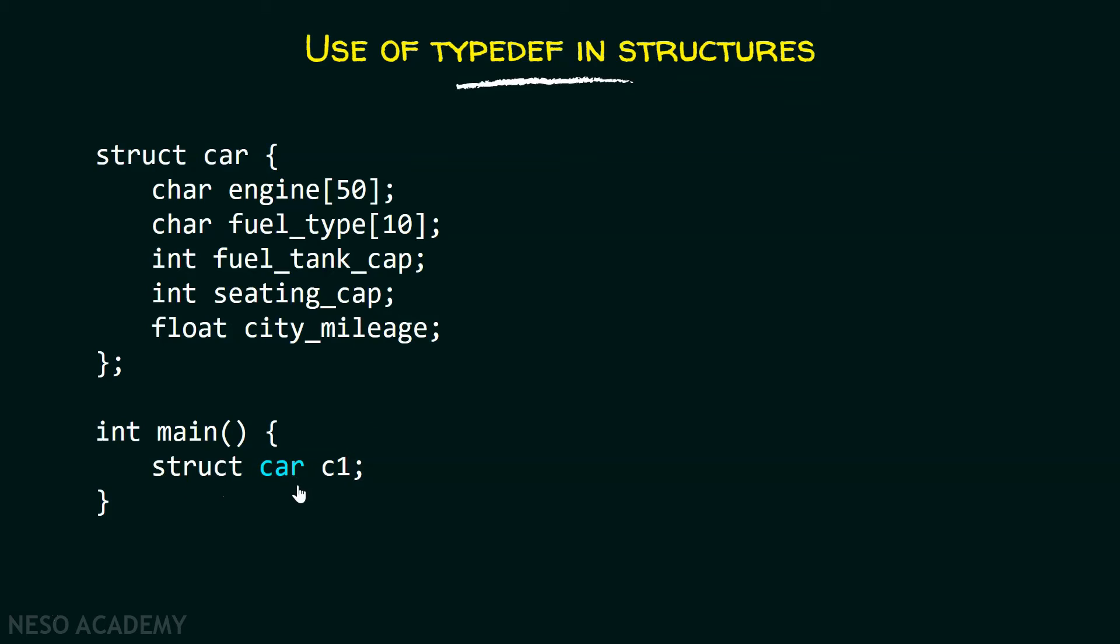Instead of writing struct car every time, we can write our own type which is actually defined using typedef. We just have to specify this typedef keyword before this old type and then we have to specify this new type.